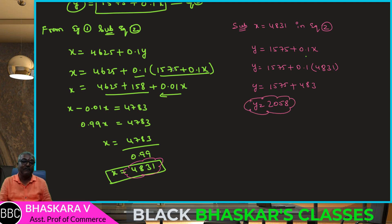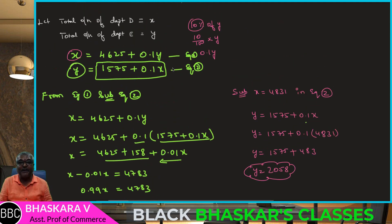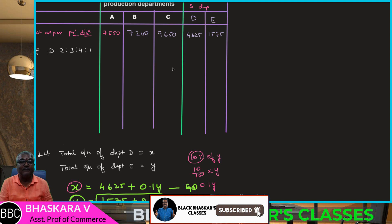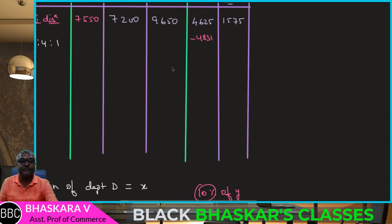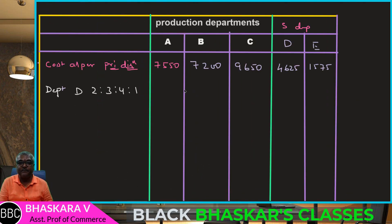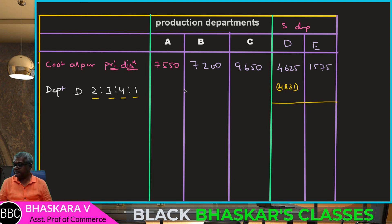So X equals 4,831 and Y equals 2,058. Now distributing D's overheads of 4,831 in the ratio 2:3:4:1 — dividing 4,831 by 10 gives 483.1 per unit. So: ratio 2 gives 966, ratio 3 gives 1,449.